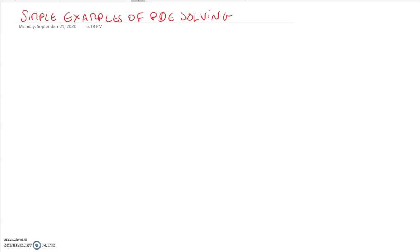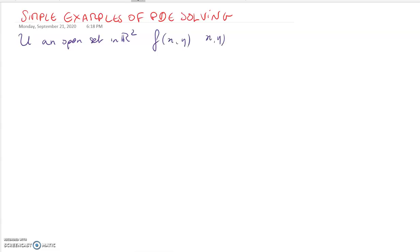Before tackling the wave equation, let's train on some very simple partial differential equations — simple examples, not linking too many things together, solved one at a time. In two dimensions, let U be an open set in ℝ². Consider a function f(x,y) where (x,y) belongs to that open set — it could be a square, a disk, or any domain in ℝ². The first example: find all functions f such that the first-order partial derivative in x equals zero.